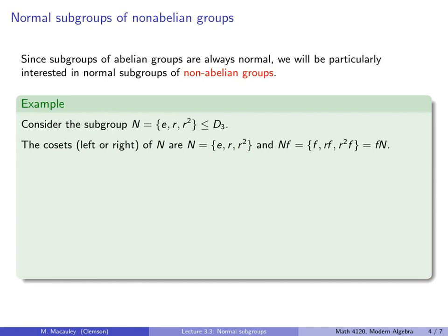And then the other coset is everything else, and that's all there is. So it doesn't matter if we write that as N times F, or F times N, and let me show you why explicitly. So NF is what you get when you attach F to the right of these three elements. So you get F, RF, and R squared F.